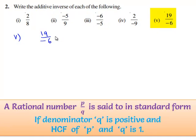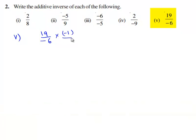For a rational number in its standard form the denominator has to be positive. Therefore to make it positive we multiply both the numerator and denominator with minus 1. Therefore we get 19 times minus 1 is minus 19 by minus 6 times minus 1 is 6.